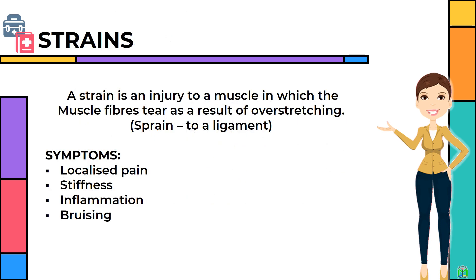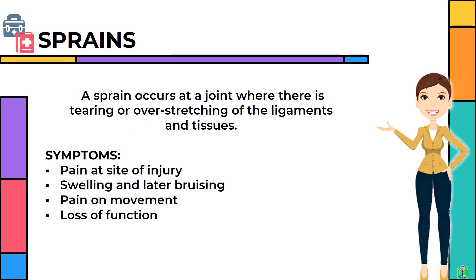A strain is an injury to a muscle in which the muscle fibers tear as a result of overstretching. A sprain refers to injury to a ligament. Symptoms include localized pain, stiffness, inflammation and bruising. A sprain occurs at a joint where there is tearing or overstretching of the ligaments and tissues. Symptoms of a sprain are: pain at site of injury; swelling and later bruising; pain on movement; and loss of function.